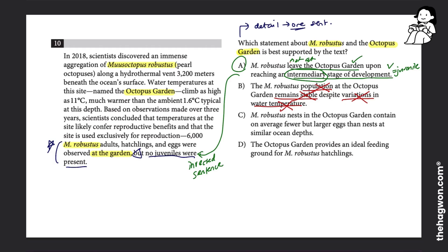C then says that M. Robustus nests in the octopus garden contain fewer but larger eggs than nests at similar ocean depths. So other nests other than the octopus garden I didn't read about, so we can't compare with them. So C is incorrect.